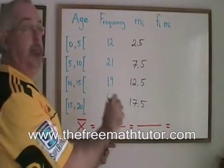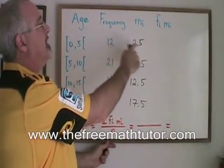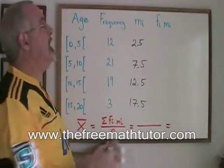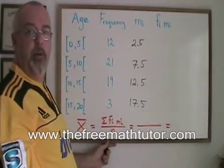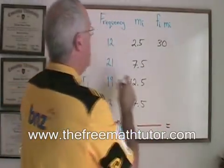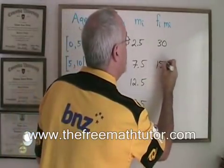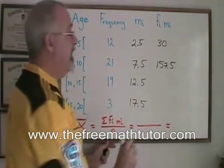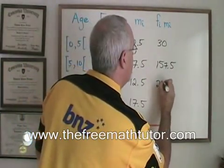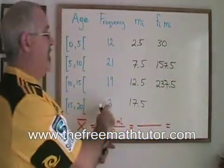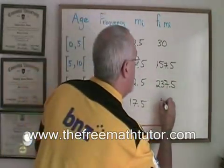The next thing to do is to multiply the frequency of each class by its midpoint, and that gives us this value fi mi. It just means fi multiplied by mi. 12 times 2.5 is 30. 21 times 7.5 is 157.5. 19 times 12.5 is 237.5. And 3 times 17.5 is 52.5.